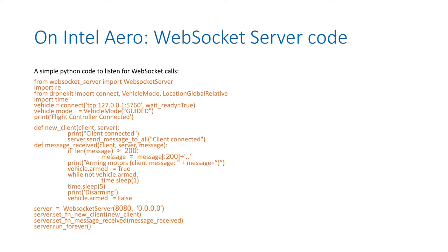Now let's look at the new client handler. We are just receiving a client and printing a message. What is interesting is that when you receive a message after a client connection is established, that's when we try to arm the motors. So first the source code will launch a connection with the flight controller, then it will launch a WebSockets server and wait for connections, and when a connection is established it will wait for messages.